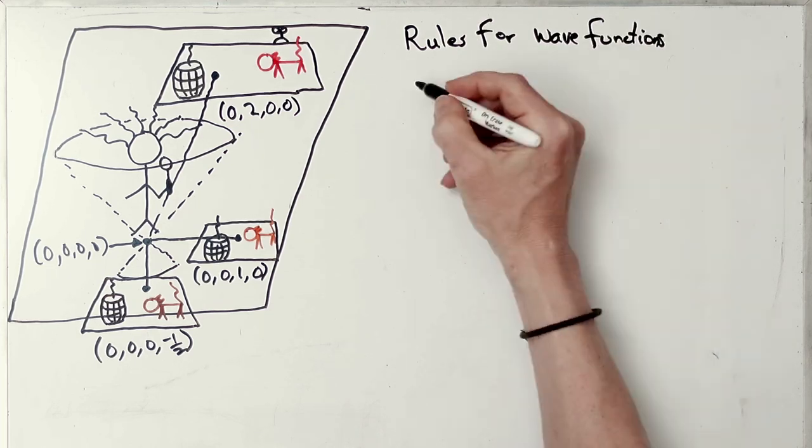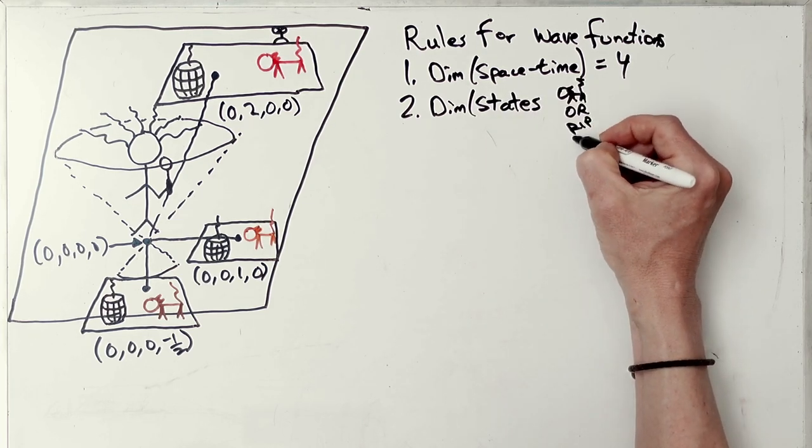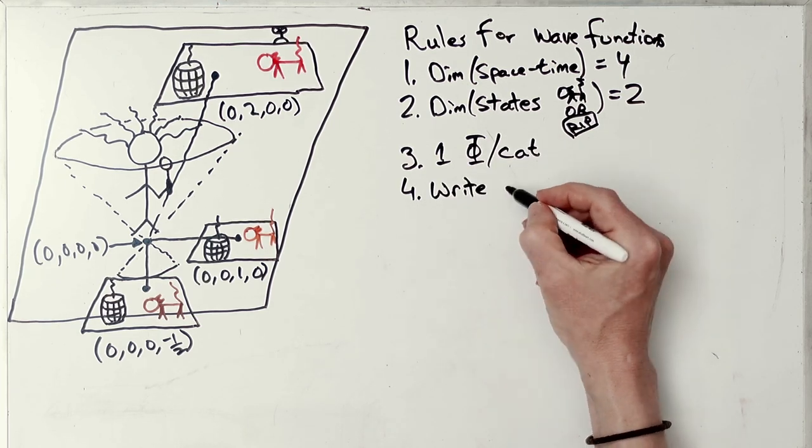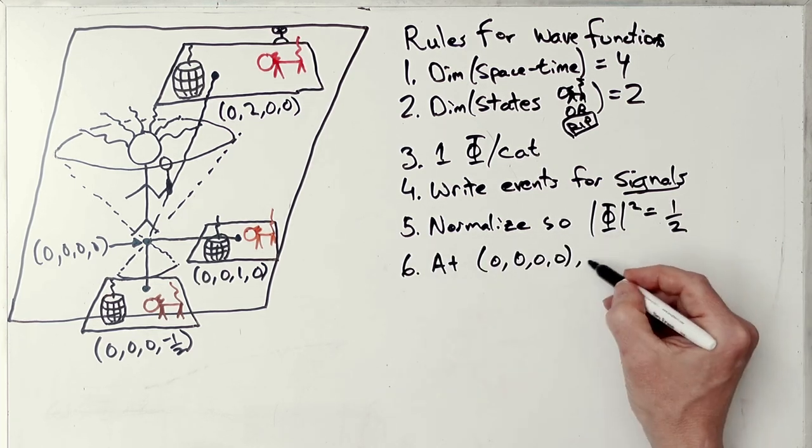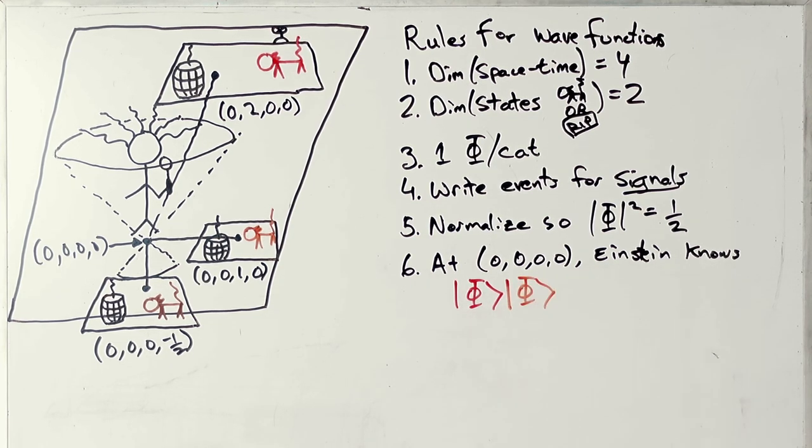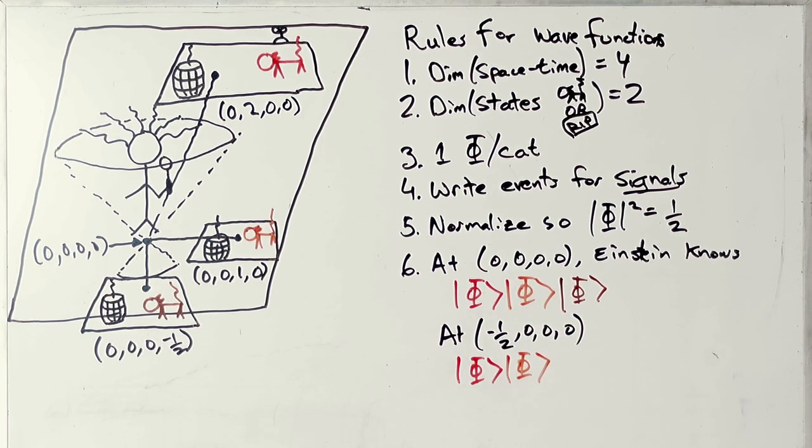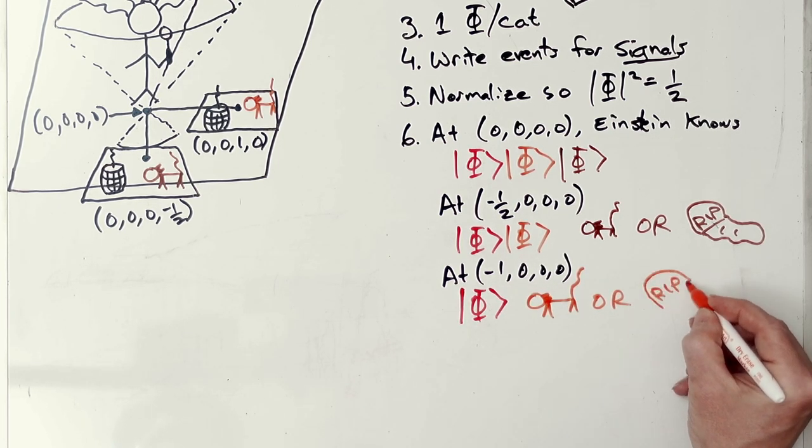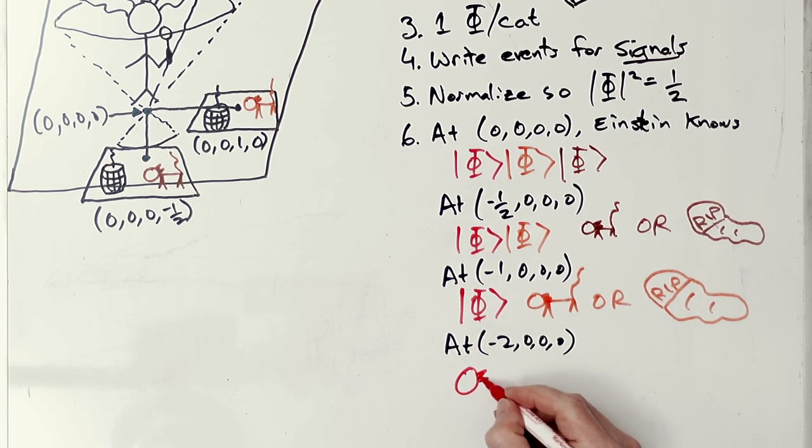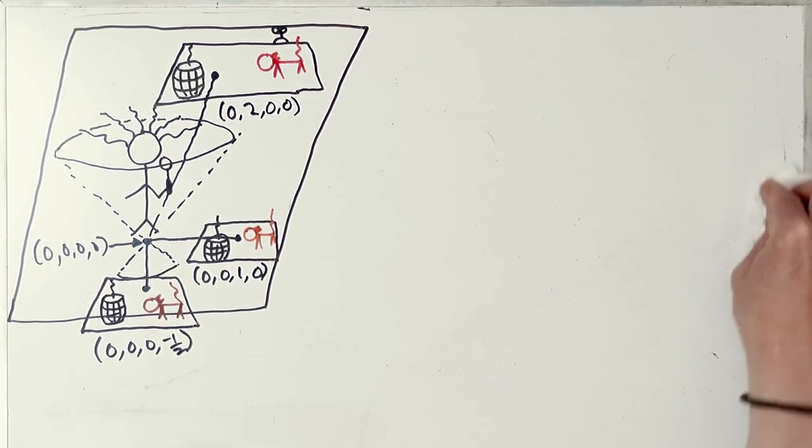So now, what are the rules for writing wave functions? So the dimensions of space-time is four. The dimensions of states is two, either live or dead. It's orthogonal, by the way. One wave function per cat. We write events for signals. And we normalize them so that the wave function has a value of a half. Now, at zero, zero, zero, zero, he knows all three wave functions. But at a half step, he knows the brown cat's final state. And at one unit in the future, he actually knows what happened to the orange cat, live or dead. And, of course, at minus two, he knows all three results.